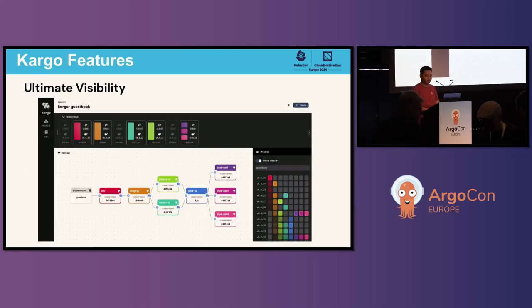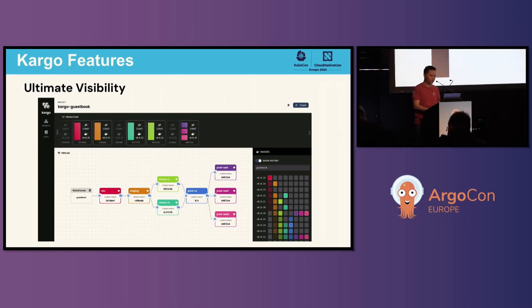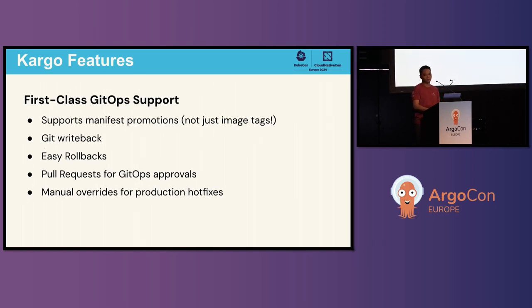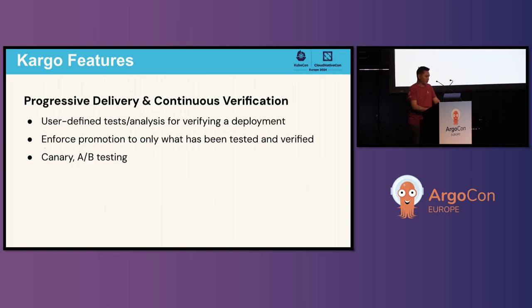With Cargo, you get better visibility into your promotion process by seeing all your environments at a glance, and you can understand what's running where and what's safe to deploy. You'll be able to see the differences between environments and how far back different stages are from each other. We built Cargo with the GitOps use case in mind, and one of the unique features is its ability to promote Kubernetes manifests and not just image tags. Cargo will make Git writebacks and rollbacks really easy with a click of a button, and it even supports the option for opening pull requests instead of writing directly to Git. Cargo also enables you to start practicing progressive delivery by running your tests and analysis as part of the deployment process, and these can be enforced so that you can only promote things that have been verified in earlier stages.